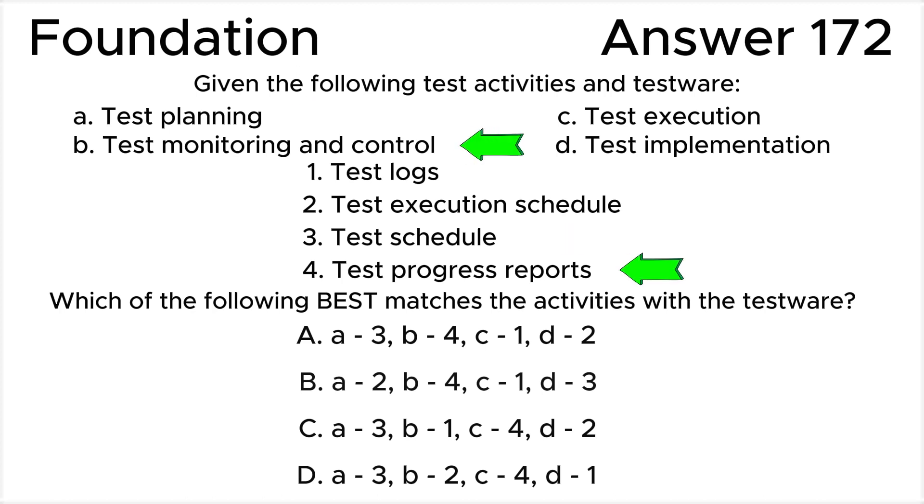Statement 4 – test progress reports – corresponds to the test monitoring and control work products. Test monitoring and control involve tracking the progress of testing and ensuring that it stays on track. Test progress reports are essential for providing stakeholders with updates on the status of testing activities.